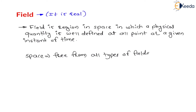Now let us understand the definition of field. Field is defined as: field is a region in space in which a physical quantity is well defined at all points at a given instant of time. This is the general definition. In this definition we have to understand a few terms. We have to understand what is the meaning of physical quantity.